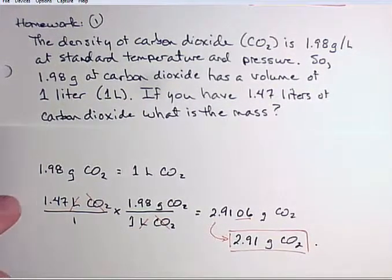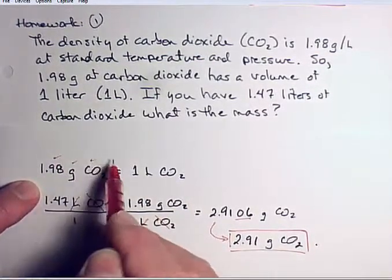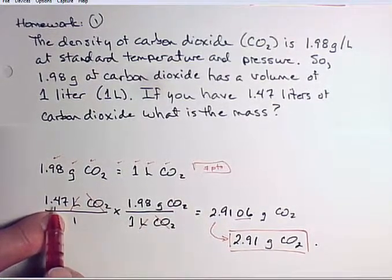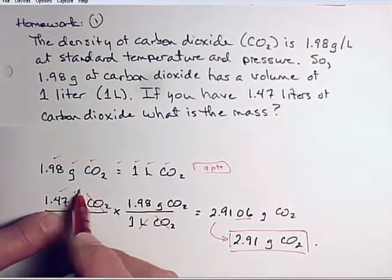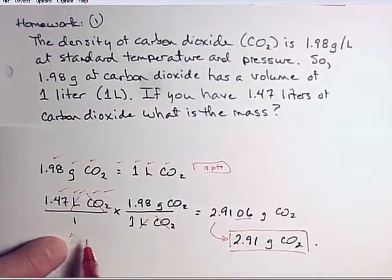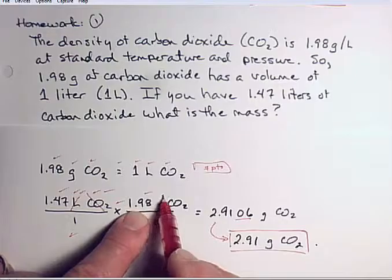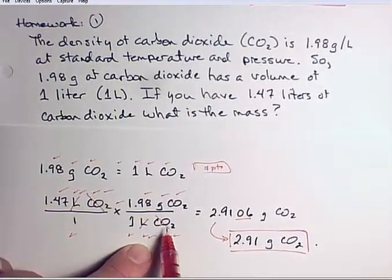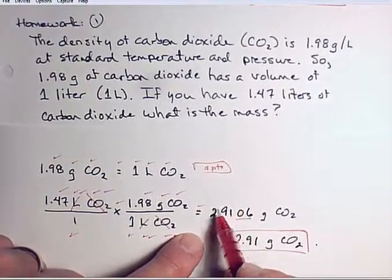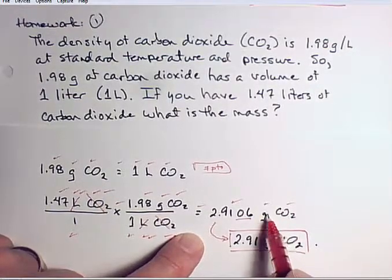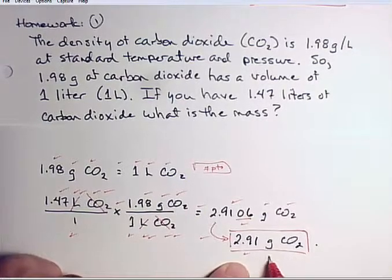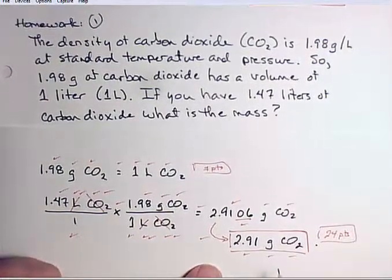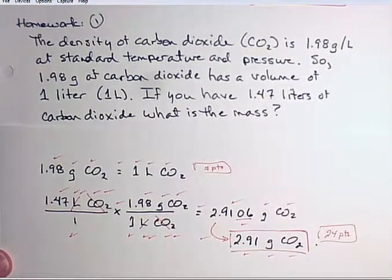So again, you're going to have 7 points for the equality statement. 1, 2, 3, 4, 5, 6, 7 points for the equality statement. We have the number, unit, species, and cancel, cancel here. So that's 1, 2, 3, 4, 5. So over the number one, there's 6. Operator, 7. Number, unit, species, 8, 9, 10. Number, unit, species, 11, 12, 13. Cancel the point. Cancel, cancel. That would be 14, 15. Operator, 16. Underline the answer is 17. Units and species, 18, 19. Underlining is 20. Arrow, 21. Number, unit, and species, 22, 23, 24 points. So that means that for just this problem, we're going to do another one together here with this one. This is going to be worth 31 points for this problem.